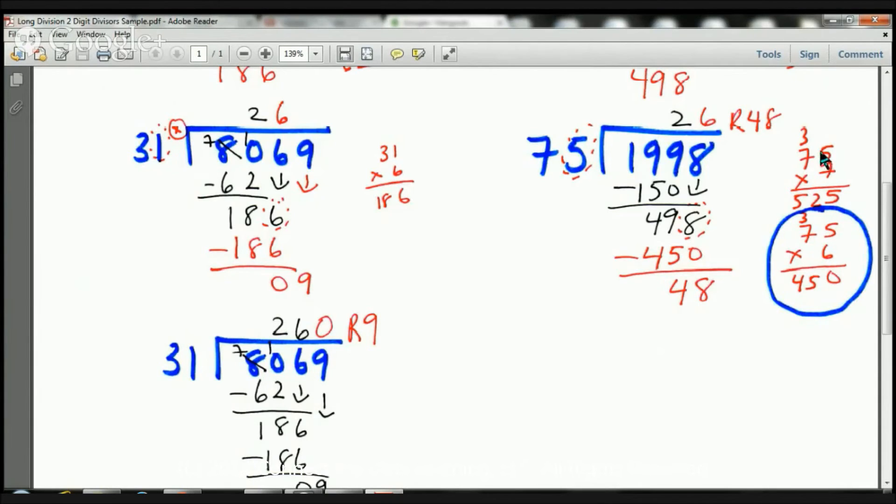Well, 7 times 5 is 35. 3 goes there. 5 goes there. 7 times 7 is 49 plus 3 is 52. Here I have 525. Well, that's going to be way too big. So I'm so glad I checked. Aren't you glad we checked? Yeah, it just takes a minute. Make sure you check. Let's practice good habits. So now because 7 is too big, I'm going to try 6.